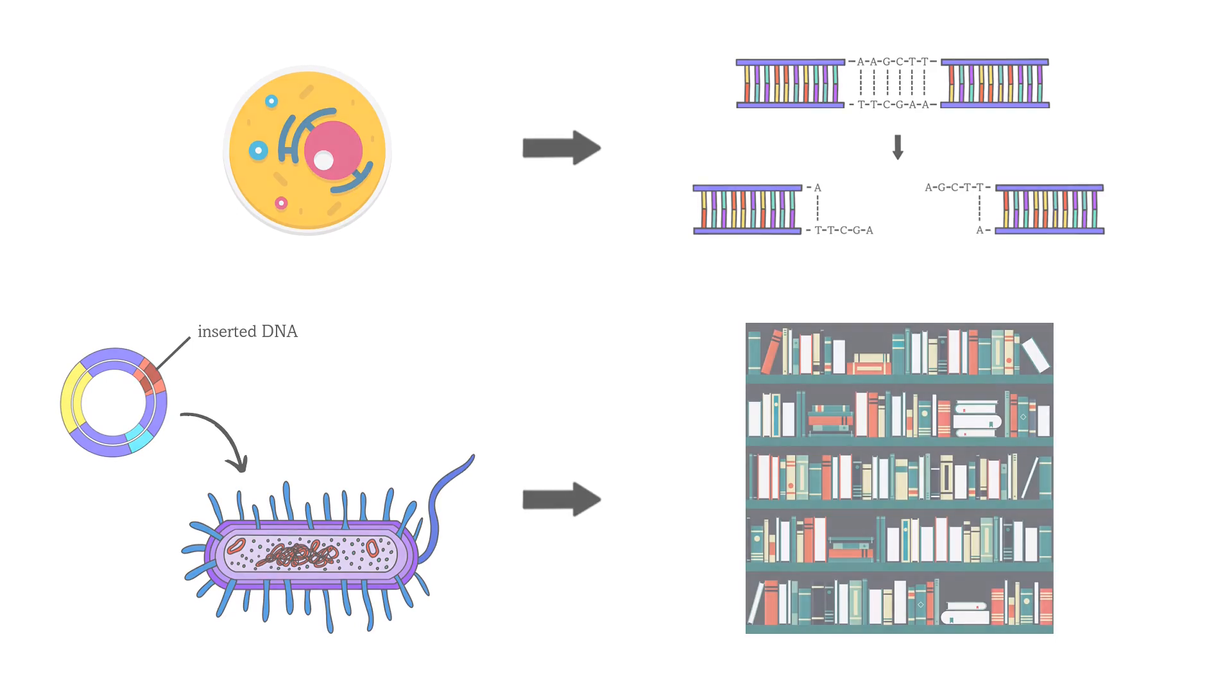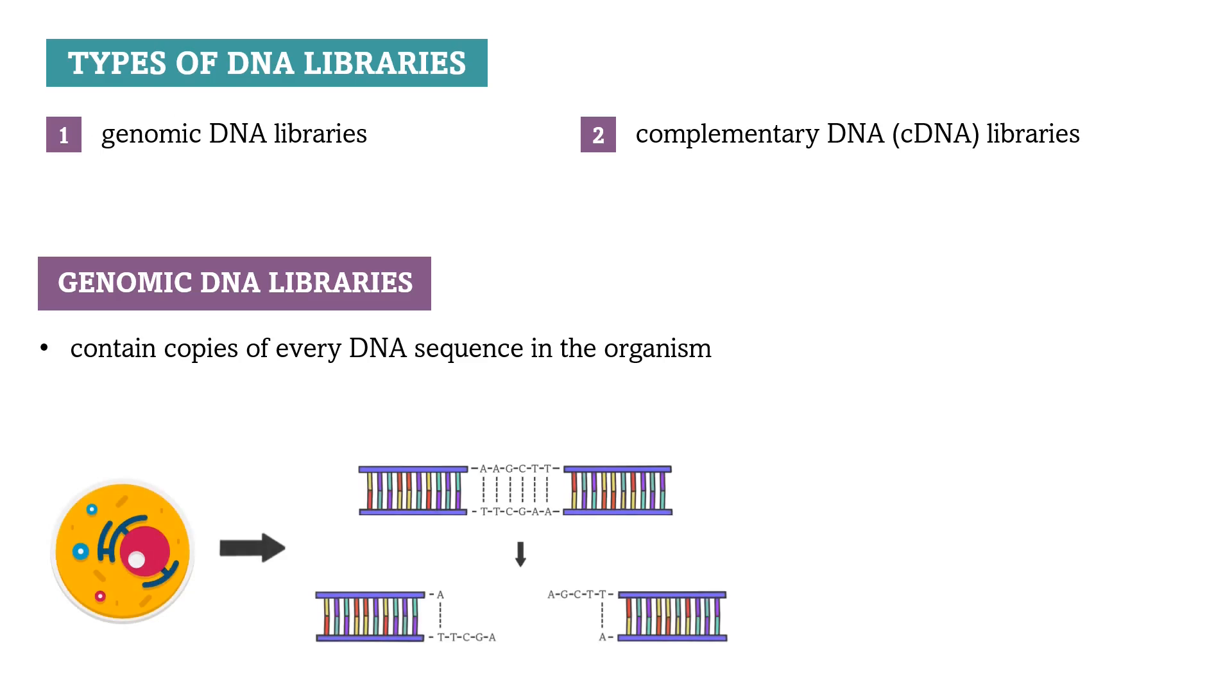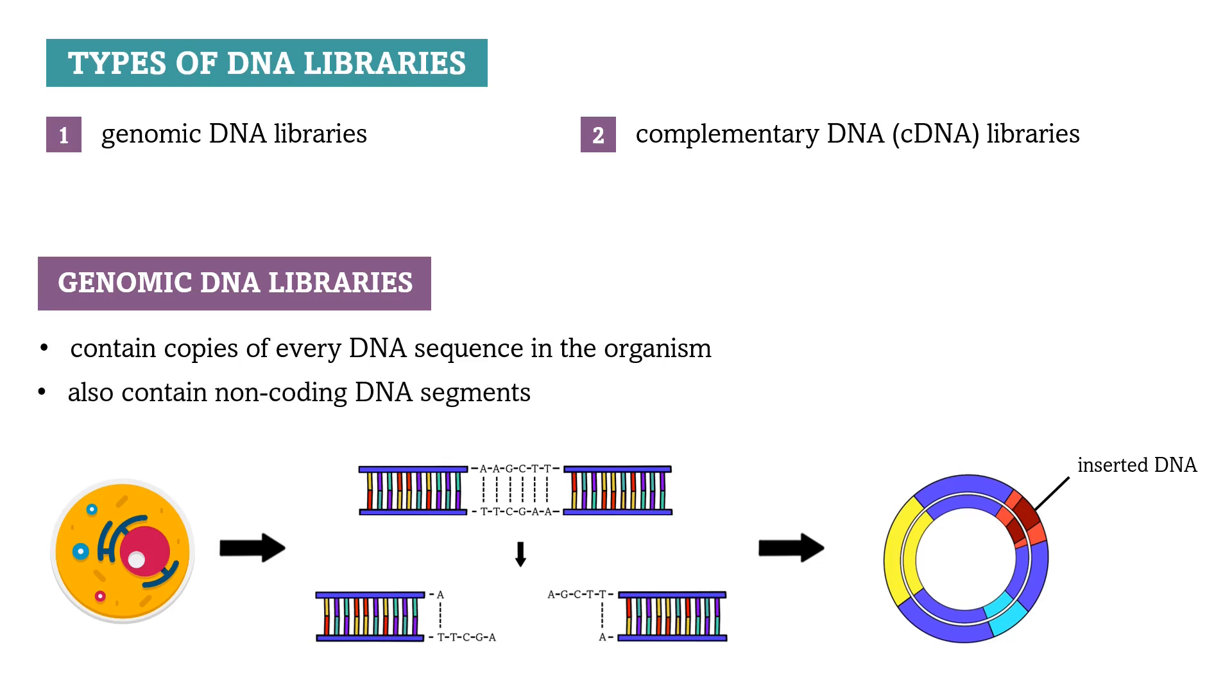Now there are two main types of DNA libraries: genomic DNA libraries and complementary DNA cDNA libraries. A genomic library contains copies of every DNA sequence in the organism. To make a genomic library, we take DNA from cells and cut it with restriction enzymes. The fragments are then inserted into vectors and cloned. The problem with genomic libraries is that because we clone the whole genome, the library also contains non-coding DNA segments.